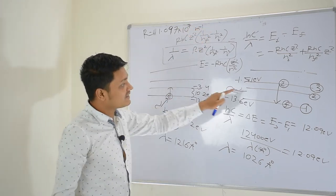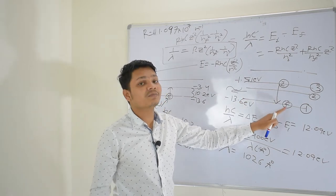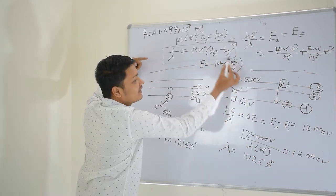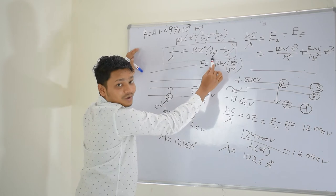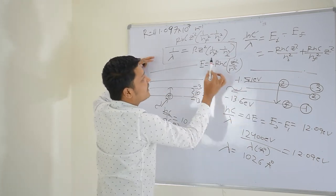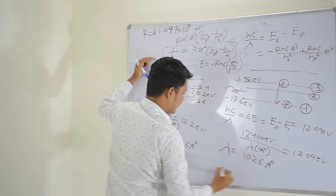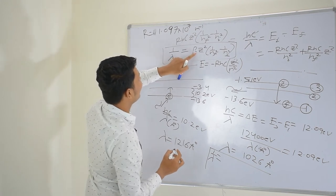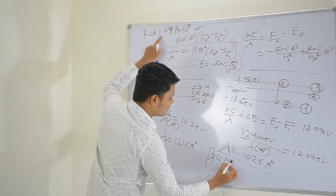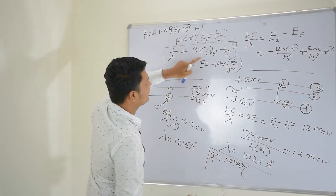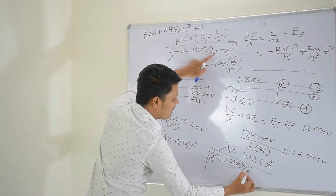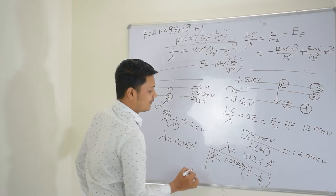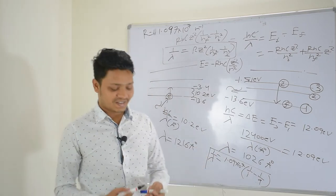Here the electron jumps from the third state to the first state, so the initial is N equals 3 and the final is N equals 1. For the hydrogen atom, Z equals 1. So you can write: 1 over lambda equals R times (1 over 1-squared minus 1 over 3-squared), where R is 1.09 times 10 to the power 7. After solving you will get exactly the same wavelength as before.